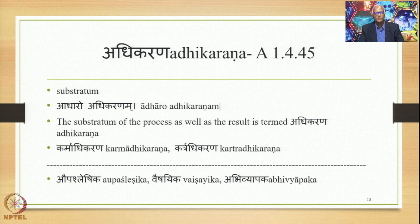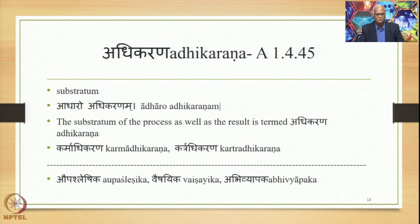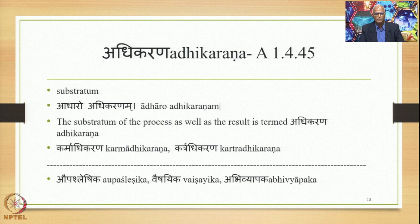Let us now study Adhikarana, stated by sutra 1.4.45. Adhikarana is a substratum — the substratum of the process as well as the result. We have two types of Adhikaranas: Karma Adhikarana and Kartra Adhikarana. These are also classified in the grammatical tradition as Aupasleshika, Vaishayika, and Abhivyapaka. We shall not go into the details of these in this particular course.